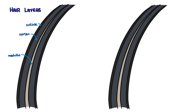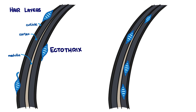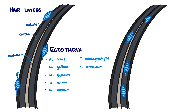Eventually, more arthrospores start developing from the hyphae. If the arthrospores form along the outside of the hair shaft, it is classified as an ectothrix. If the arthrospores form on the inside of the hair shaft, it is called an endothrix. These arthrospores, when detached from the hyphae they're growing from, can go on to infect other animals.